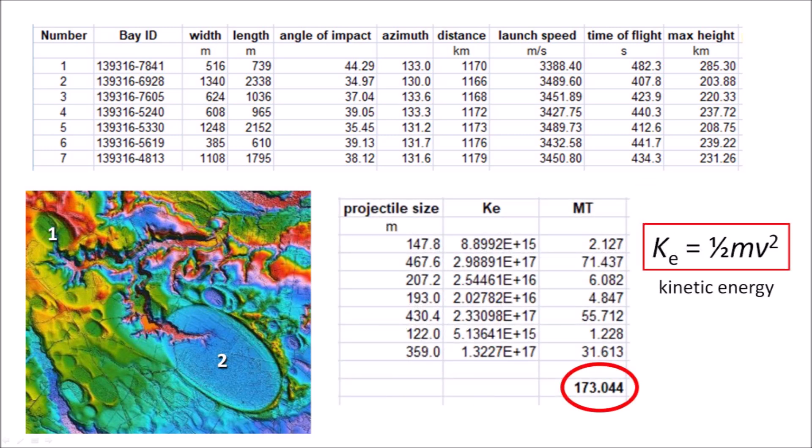Estimating the projectile diameters to be about one-fifth of the length of the bays, we can calculate the kinetic energy of the impacts. Just these seven impacts had a combined energy of 173 megatons of TNT. Similar calculations in Marlboro County, South Carolina have yielded estimates of 8 megatons of TNT per square kilometer. The impacts that made the Carolina Bays really packed a punch.